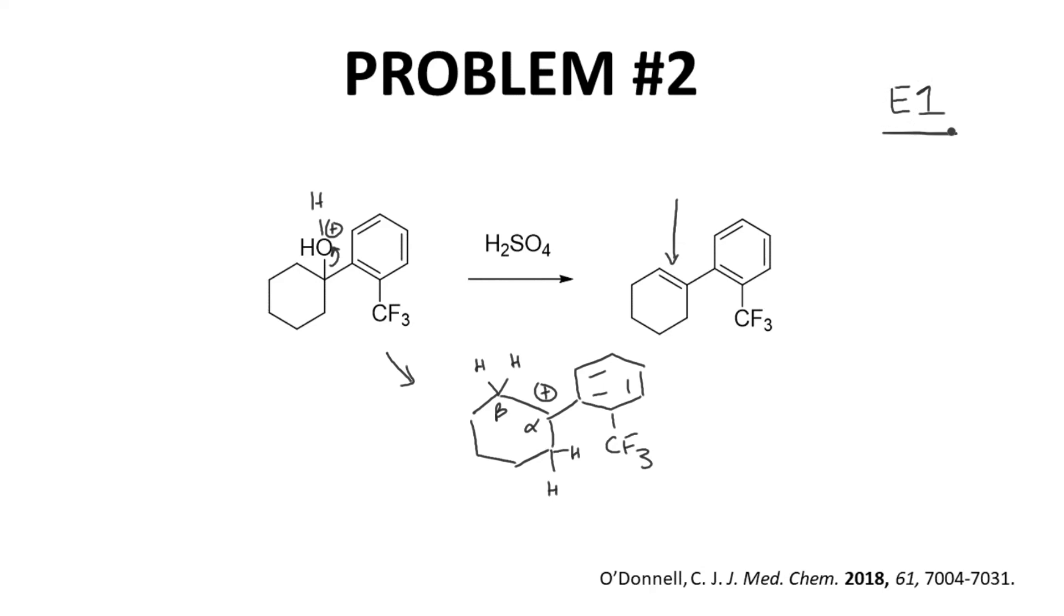One common issue I see with students is that they sometimes want a strong base to remove the beta hydrogen. This is a deprotonation, after all. So they invoke a really strong base, like sodium hydroxide, to do the reaction. However, this reaction is run in strong acid. There is no NaOH in the reaction. That's okay.